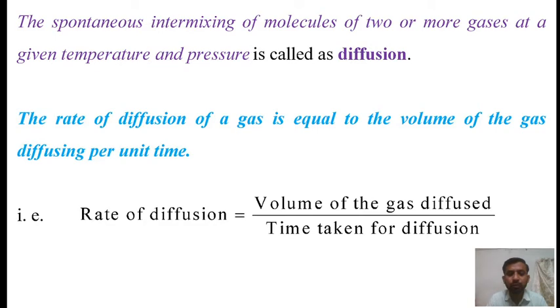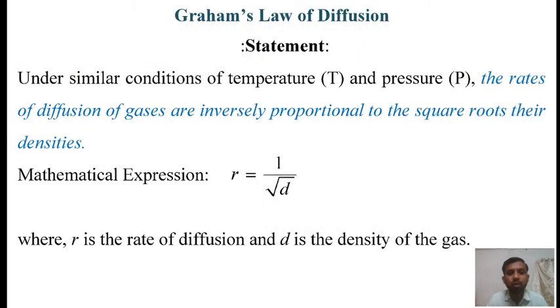Thomas Graham put forward a generalization after studying the rates of diffusion of different gases, which is known after his name as Graham's law of diffusion. The law stated that under similar conditions of temperature and pressure, the rates of diffusion of gases are inversely proportional to the square roots of their densities, which is mathematically expressed as R equals 1 upon square root of D, where R is the rate of diffusion and D is the density of the gas.